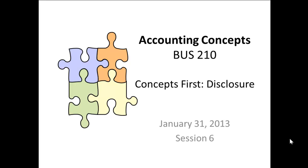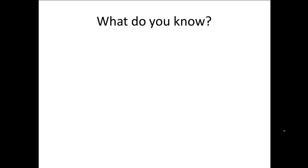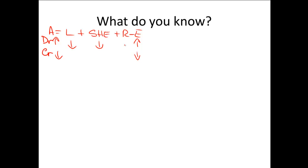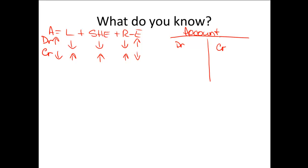To start off, we always begin with what do you know. We know that debits equal credits. We know that assets equal liabilities plus shareholders' equity plus revenue minus expense. That debits increase assets, credits decrease. Expenses act like assets, and liabilities, shareholders' equity, and revenue act the exact opposite. We also know that we have different accounts, and those accounts each have a T. The debit side is the left side, and the credit side is the right side. So what we're going to be doing today is reconstructing those accounts and the journal entries that go with those accounts to find the missing numbers.